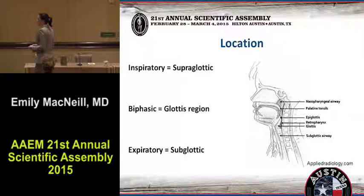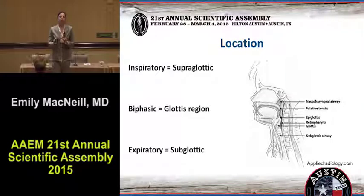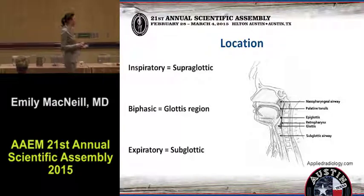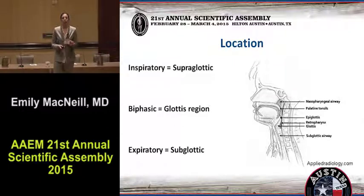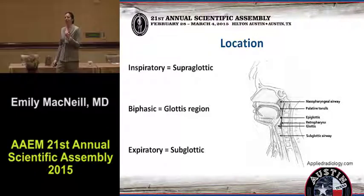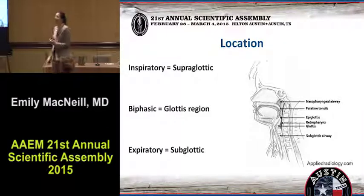So: location, location, location. This is actually pretty fascinating because you can tell where the problem is just by watching the child as you walk into the room. It's all physics. If it's inspiratory stridor, the problem is above the vocal cords. Try it when you get back to your hotel room — you'll see. Oh, that's above my vocal cords. Interesting.